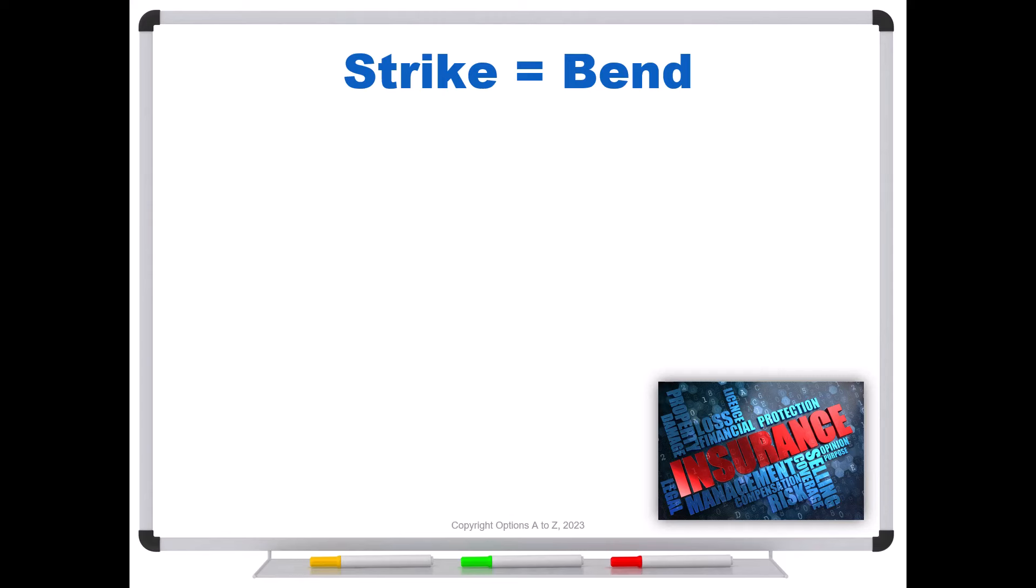So the strike is the bend. What does this mean? Well, remember that all risk graphs bend at every single strike price. Whether it's a long or short option, you will get some type of a bend. And the bend, again, is the insurance policy.